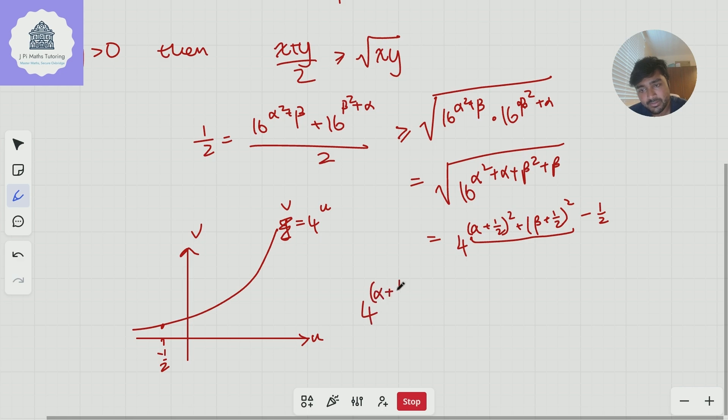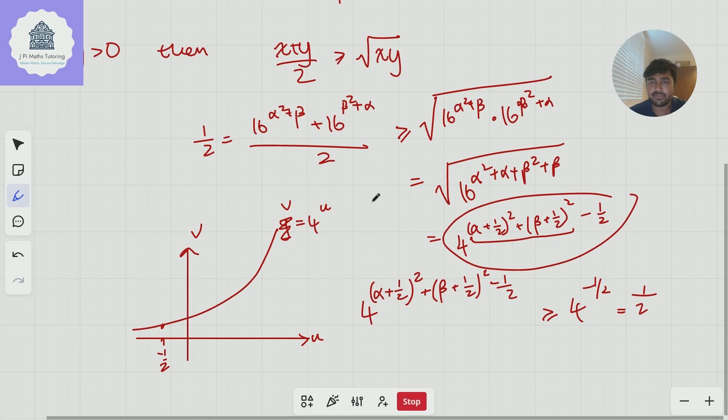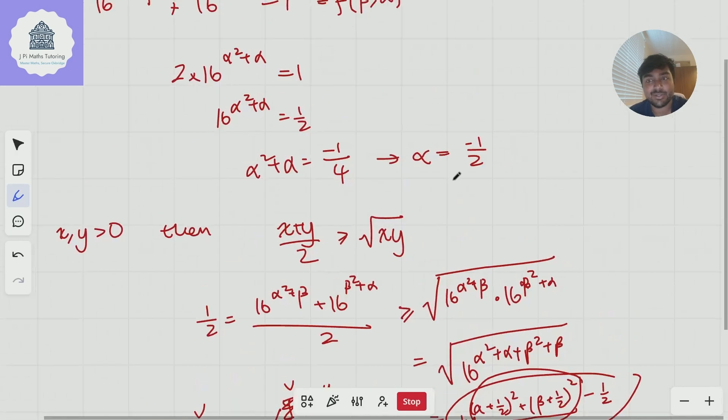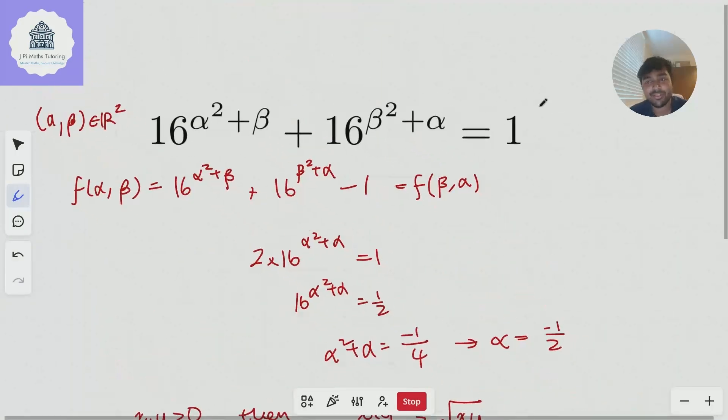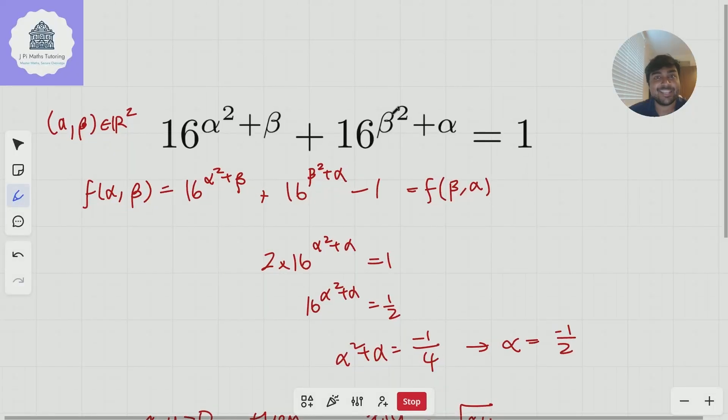So 4^((α+1/2)² + (β+1/2)² - 1/2) must be at least 4^(-1/2). But 4^(-1/2) is just one half. And so we've got that this expression here is both less than or equal to a half, but it's also bigger than or equal to a half. And thus the only value it can take is a half. And that's precisely when the sum of these two squares here is zero. And that's when α = -1/2 and β = -1/2. And that's the solution we'd already found. And therefore, the number of solutions to this equation here is one.